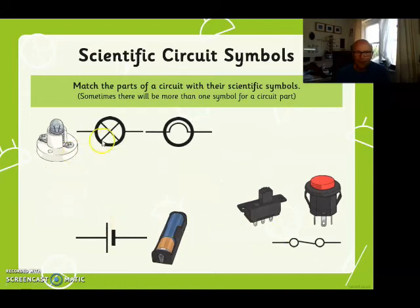So the scientific symbol for a bulb is a circle with either a cross through it or this semicircle inside. Scientific symbol for a cell is two lines with wires coming out of each side, and this is the scientific symbol for a switch.